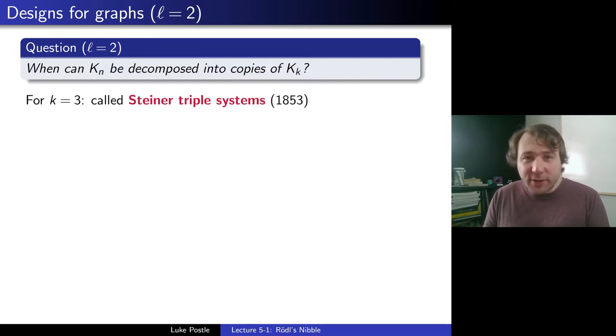And let's just even look at the k=3 case. These are the so-called Steiner triple systems, as introduced by Steiner in 1853. And it's saying, when can we decompose K_n into triangles?